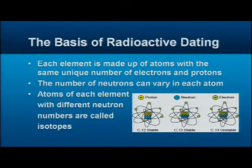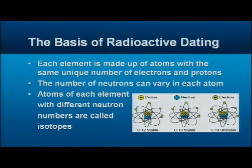Every element, whether it's carbon, oxygen, or hydrogen, is made up of atoms. Each of these atoms has the same unique number of electrons and protons. The number of neutrons, however, in the nucleus of the atoms in many elements can vary.